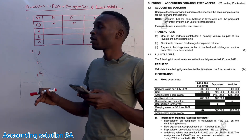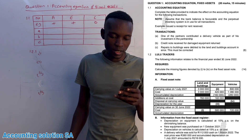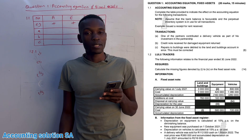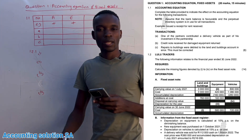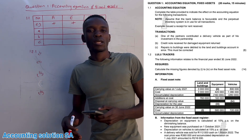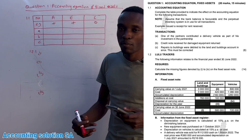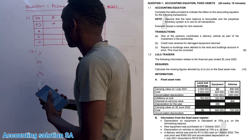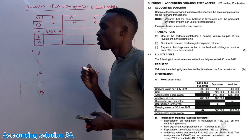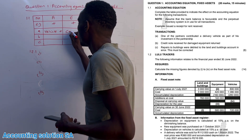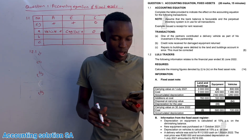Transaction A: one of the partners contributes a delivery vehicle as part of his investment in the partnership. One of the partners contributed a vehicle, which means a vehicle has increased — as a business we received a vehicle we'll use for deliveries or collecting stock. A vehicle is an asset, so under assets we have a vehicle with a plus. Capital also increases. There is no effect on liabilities.